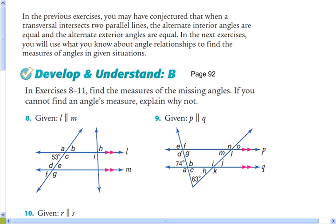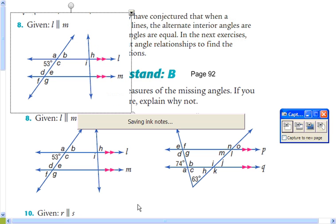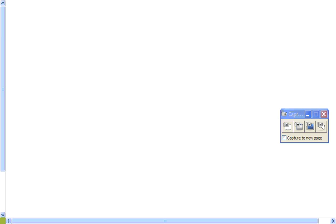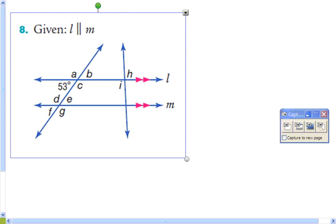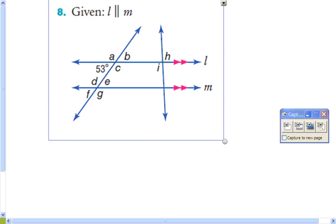I'm going to take a picture of number eight. Put it on a new page so we can enlarge it. We're going to try and find as many angles as we can, given angle L is parallel to angle M. So we have L parallel to M.